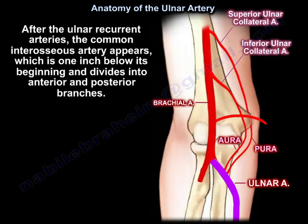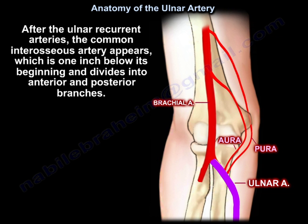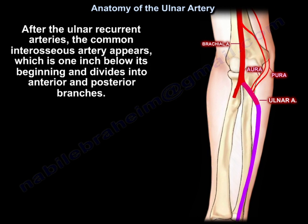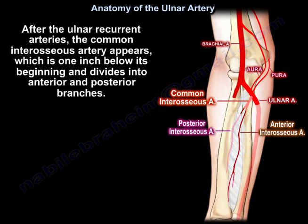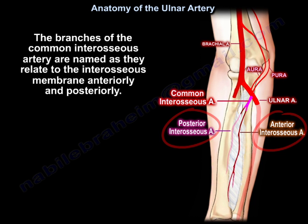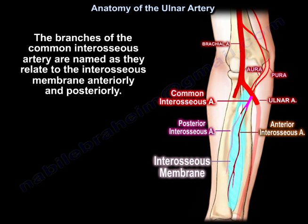After the ulnar recurrent arteries, the common interosseous artery appears, which is one inch below the beginning of the ulnar artery, and divides into anterior and posterior branches. The branches of the common interosseous artery are named as they relate to the interosseous membrane — anteriorly and posteriorly.